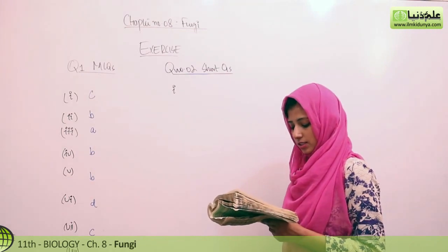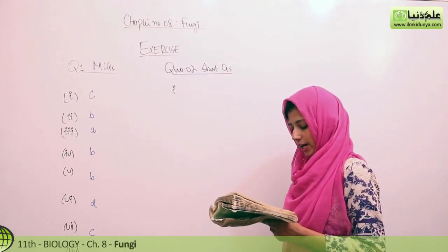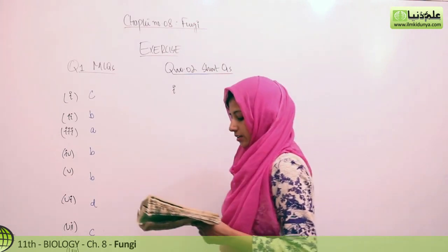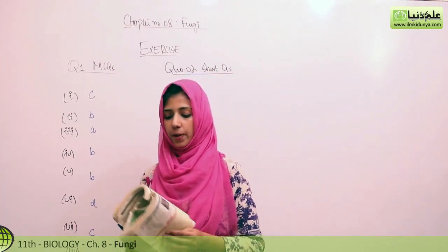Third, the zygomycetes. Option A, hyphae have hyphae without regularly occurring cross walls because their hyphae are coenocytic, septate hote hain.